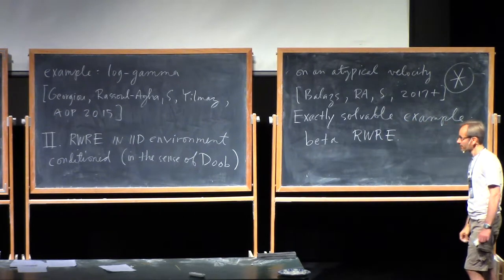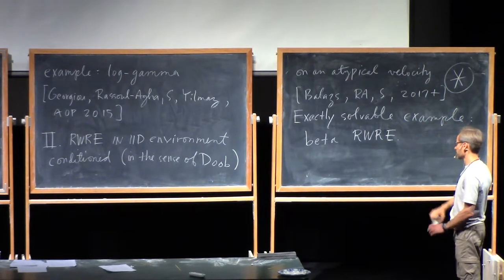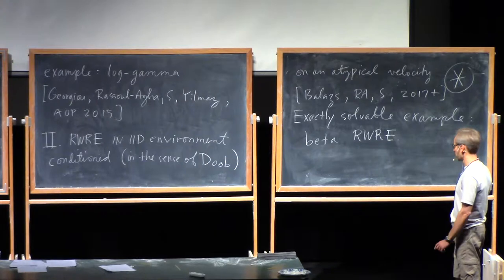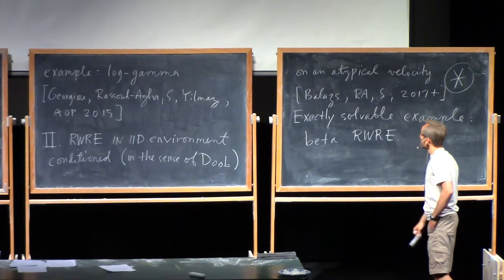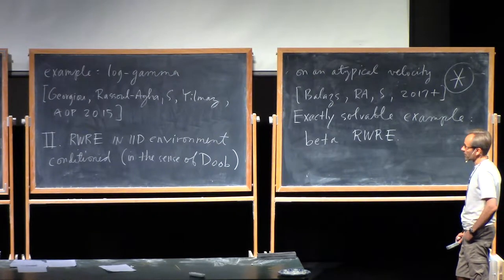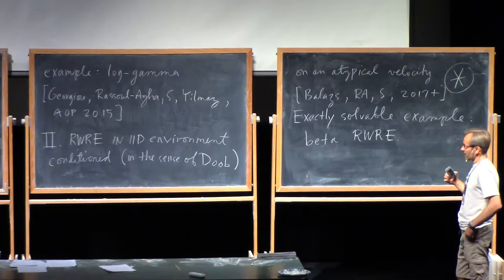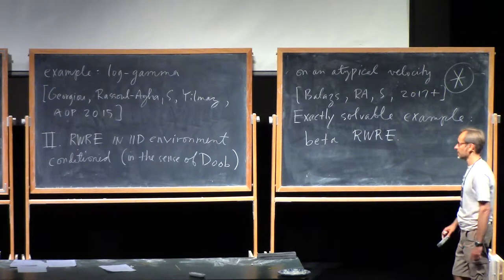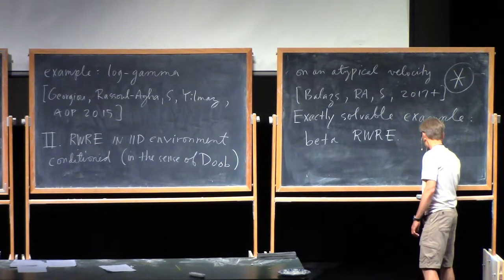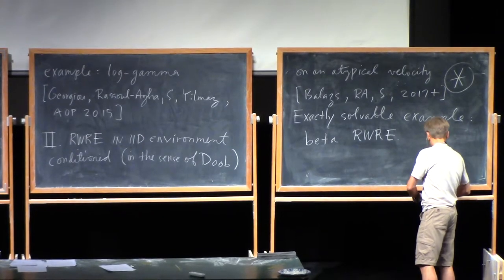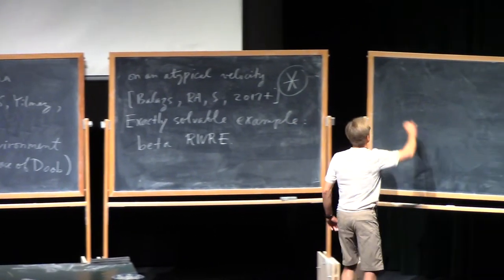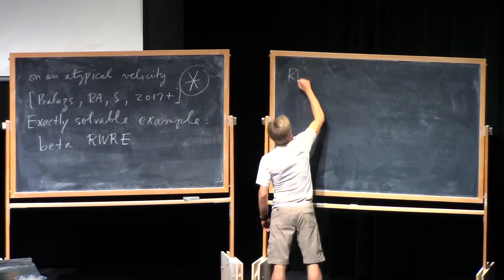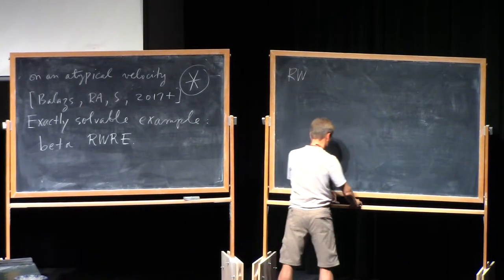All right. So, that's where we're headed. So, I hope to describe some of the results for this beta RWRE, that show how this atypical velocity conditioning puts it into a situation where it seems to be exhibiting KPZ behavior. But now, let me start from the very beginning and just tell you what RWRE is, for starters. So, let's talk about RWRE, random walk in random environment, on Z^D.